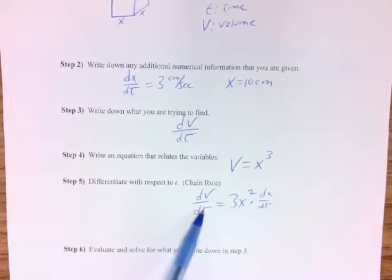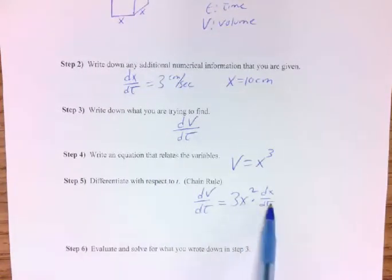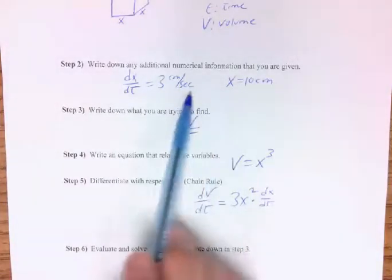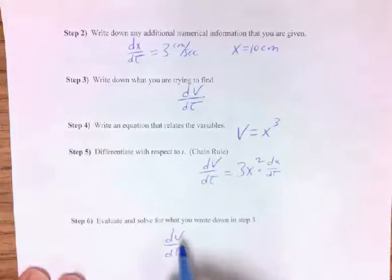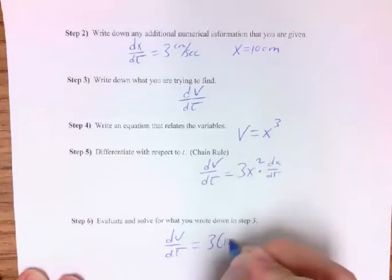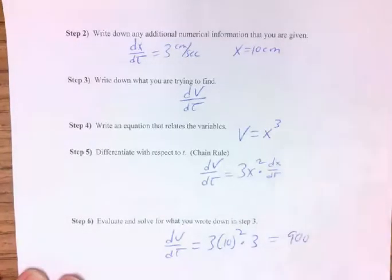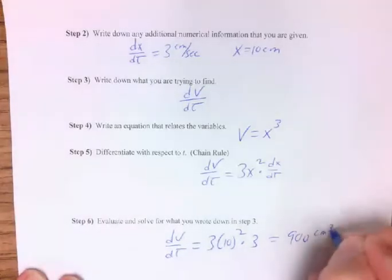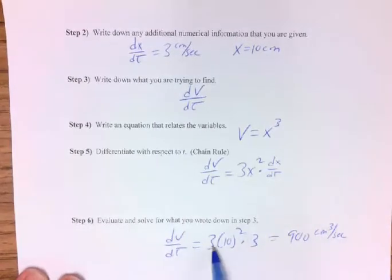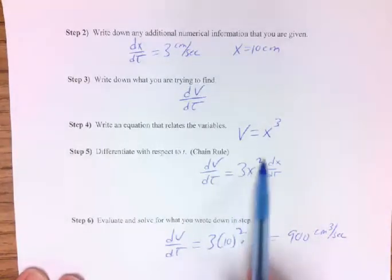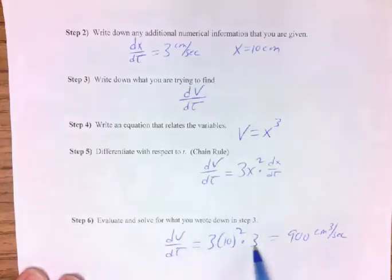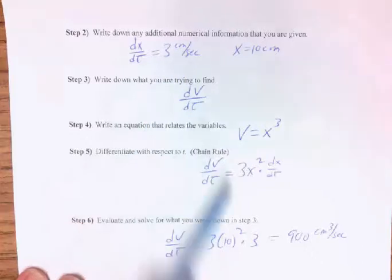Evaluate and solve for what you wrote down in step three — we're trying to find dV/dt. Luckily, this one is already solved for dV/dt. I just need to know X and dX/dt — how convenient, I know both. So dV/dt = 3 times 10 squared times 3, which is 900. The units? Volume would be cubic centimeters per second. That makes sense: X² is centimeters squared, times dX/dt which is centimeters per second, gives centimeters cubed per second. And there's your first one.